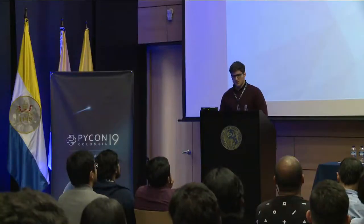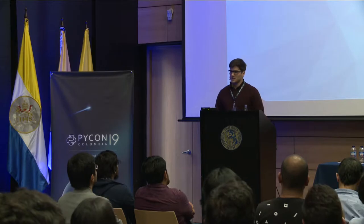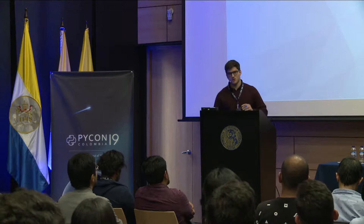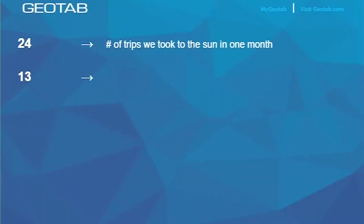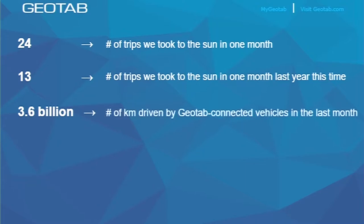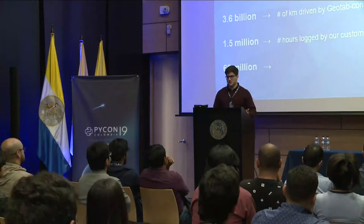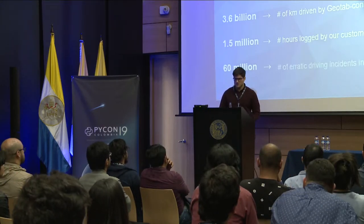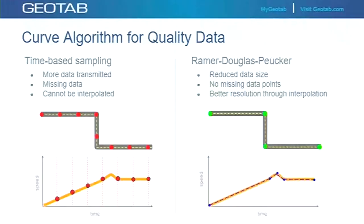To help you understand what all this data means: if we add all the kilometers driven by our vehicles in one month, we could make 24 trips to the sun — that's 3.6 billion kilometers. That's 85 percent more than last year, when we were doing 13 trips to the sun. On average our customers log 1.5 million hours of driving in one day, equivalent to 170 years of driving in just one day. And maybe the most interesting for these projects: 60 million erratic driving events per month — harsh braking, harsh cornering, speeding, harsh acceleration.